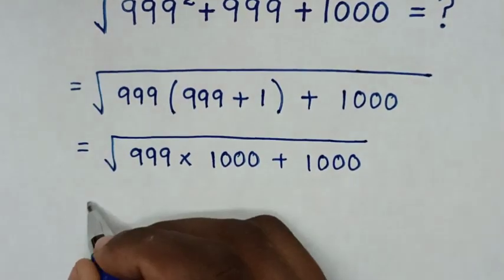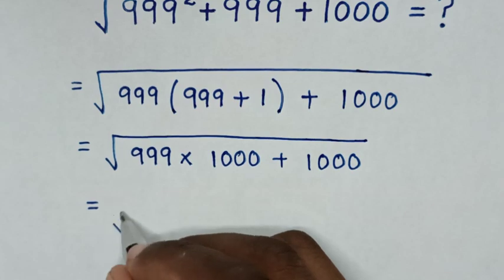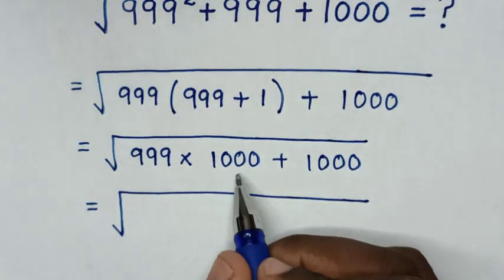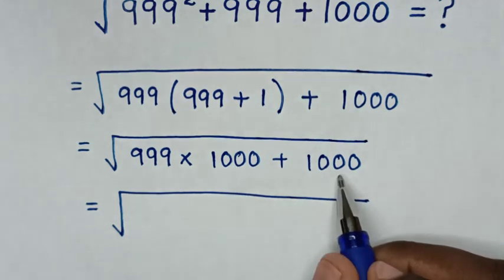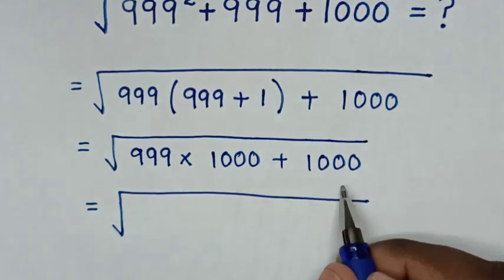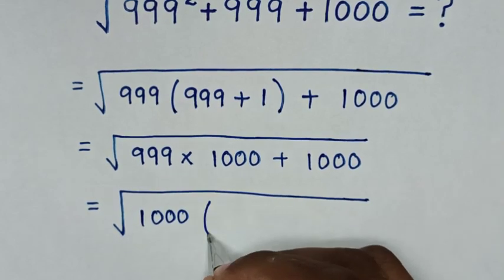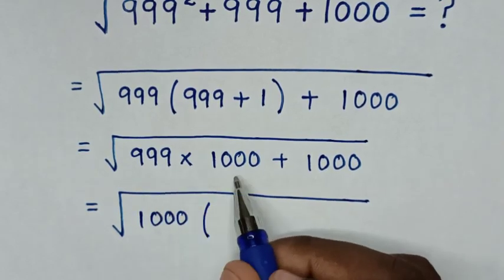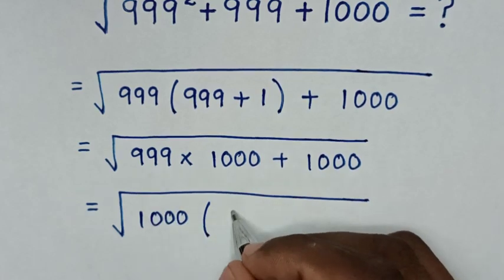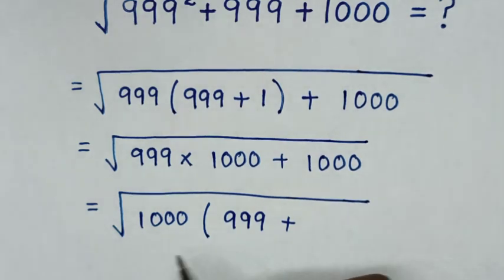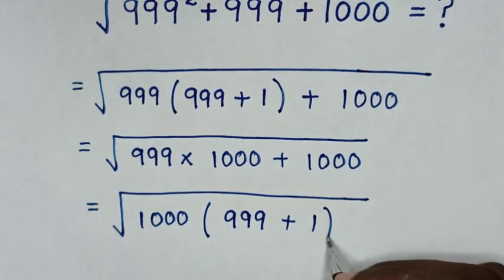Then in next step it will be equal to square root. From here 999 times 1000 plus 1000, 1000 is common. So we take 1000 out of bracket. Then 999 times 1000 divided by 1000 is 999, then plus 1000 divided by 1000 is 1 bracket.